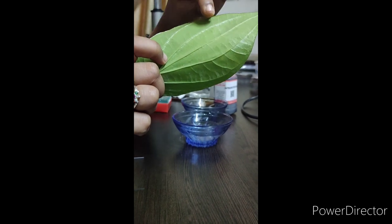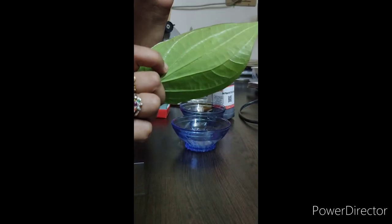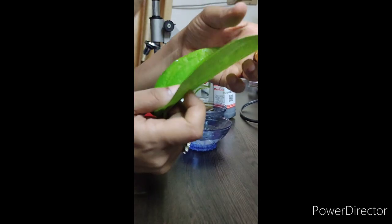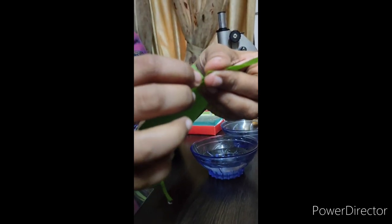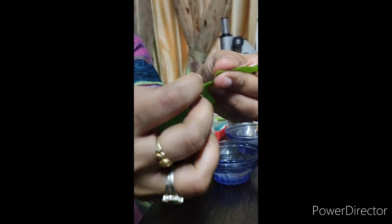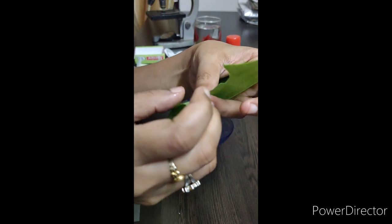So, we have to get the thin layer from this leaf. To get the thin layer, what we have to do is, we will be tearing the betel leaf in the opposite direction of the veins. So that the thin layer will be seen.